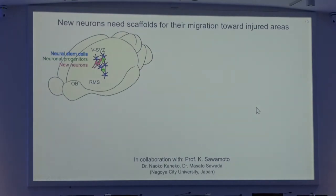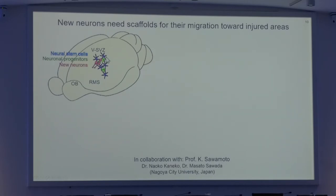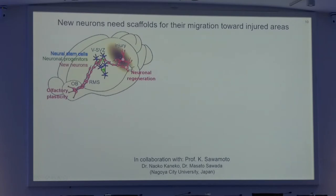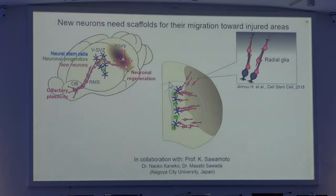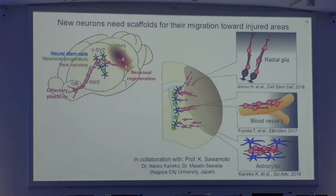Another aspect that really interests us is neuronal migration in mouse brain injury models. This is the result of a collaboration with the group of Professor Katsunobu Sawamoto at Nagoya City University in Japan. As mentioned at the beginning, new neurons produced in the ventricular zone migrate to the olfactory bulb providing olfactory plasticity under normal conditions. But when an injury occurs, many of these new neurons change their migration pathways and are attracted to the injury site. We have found that in this migration process, new neurons use scaffolds such as radial glia processes in the neonatal brain, but also blood vessels and astrocytic processes in the adult brain.